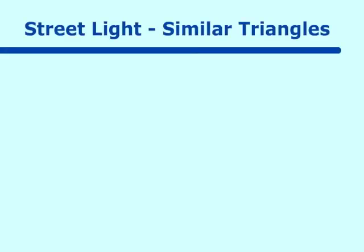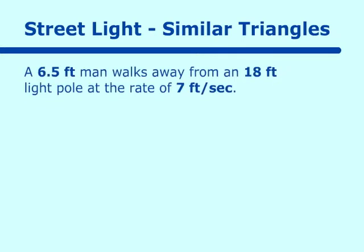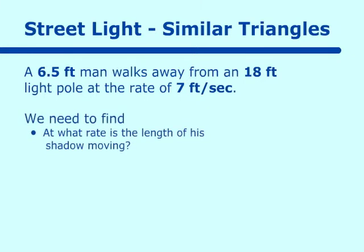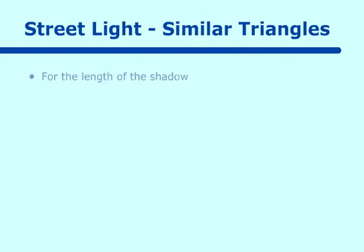Let's go to the street light problem. This time we have to deal with similar triangles. A 6.5-foot man walks away from an 18-foot light pole at the rate of 7 feet per second. We want to find two things: first, at what rate is the length of the shadow changing, and second, at what rate is the tip of the shadow moving. We'll make a triangle for the first part.